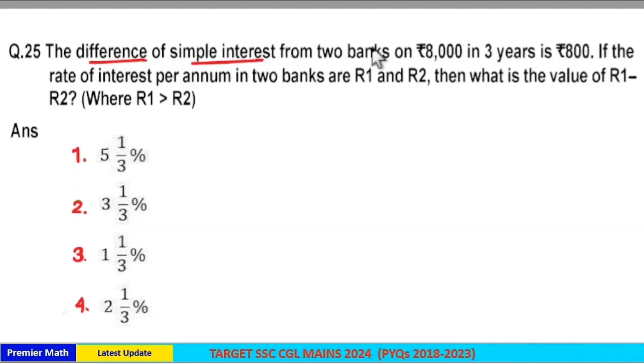The difference of simple interest from 2 banks on Rs. 8000 in 3 years is Rs. 800. If the rate of interest per annum in 2 banks are R1 and R2, then what is the value of R1 minus R2, where R1 greater than R2?